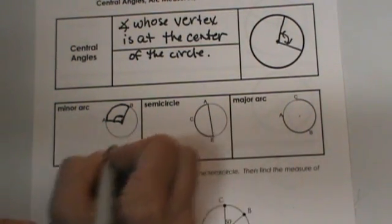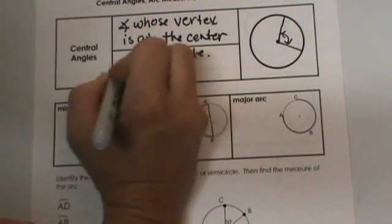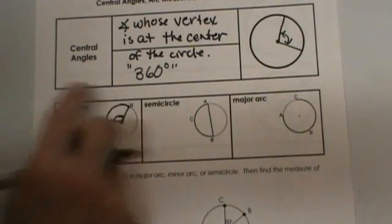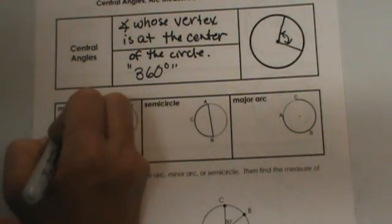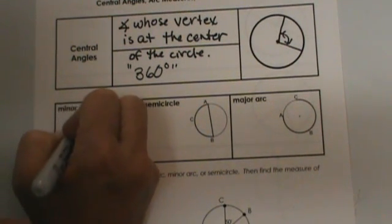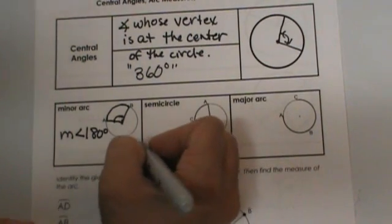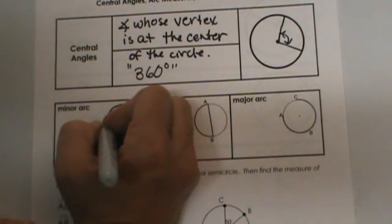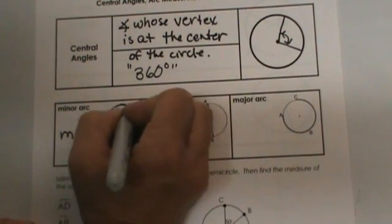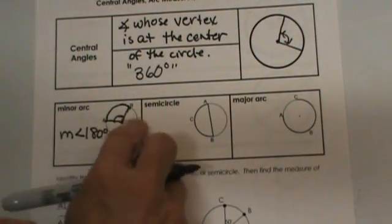We know a circle has 360 degrees. So when we take a central angle and we are looking at a minor arc, that minor arc is going to have a measure that is less than 180, or less than half of that arc. So A to B is less than half of the circle, so that central angle is going to be less than half of 180.